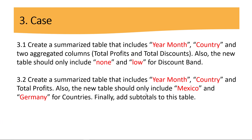We have two questions here. The first question is to create a SUMMARIZE table that includes year, month, country, and total profits. Also, the new table should only include None and Low for discount band. The second question: create a SUMMARIZE table that includes year, month, country, and total profits. The new table should only include Mexico and Germany for countries. And finally, for the same question, we need to add subtotals to this table. Really interesting questions — let's go to Power BI Desktop.